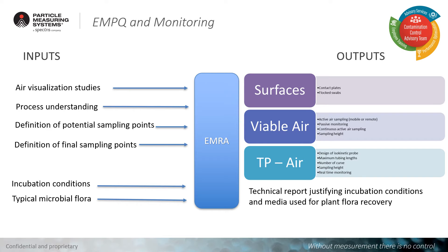Let's talk about some of the inputs and outputs when establishing your environmental monitoring program. On the left, we have our inputs: air visualization studies and process understanding. This serves to correlate the process with the monitoring data and allows us to identify areas and operations that are critical for production. We gather detailed information about your process to define all critical operations and locations, helping us define potential sampling points and identification of critical areas by HACCP analysis. We choose points within those critical areas according to defined criteria, and can demonstrate a thorough evaluation based on scientific criteria. This helps us define our final points based on available space, environmental design, evaluation of product, and primary container closure exposure.